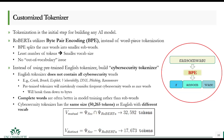RoBERTa's pre-trained tokenizer is built on general English corpora and therefore does not contain many cybersecurity-related words and subwords such as crack, vulnerability, DNS, phishing, and ransomware. So we trained the tokenizer on the collected corpus to cover all these important cybersecurity tokens. The pre-trained model's vocabulary size is 52,265 words, so we used the same size for our own tokenizer. Our investigation shows there are 32,592 mutual words between general English and cybersecurity language, meaning the cybersecurity-specific tokenizer contains 17,673 new tokens never seen in the off-the-shelf model.